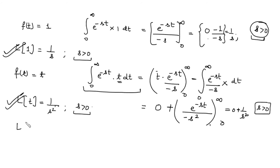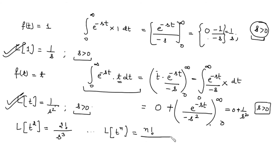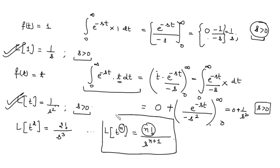Similarly, when you find the Laplace of t squared, that comes out to be 2 factorial upon s cubed. In general, the Laplace of t to the power n comes out to be n factorial upon s to the power n plus 1, provided s is strictly greater than zero. You can use this formula directly in questions to find the Laplace of t to the power n.